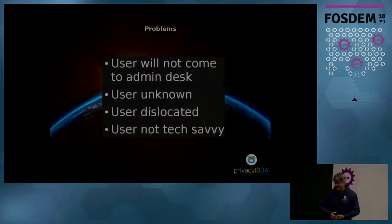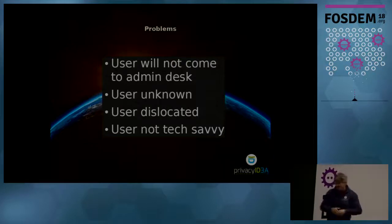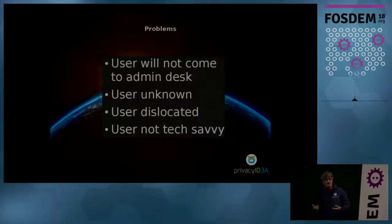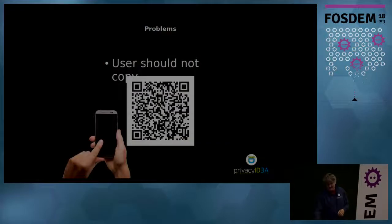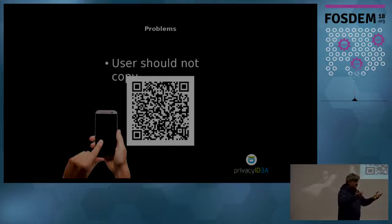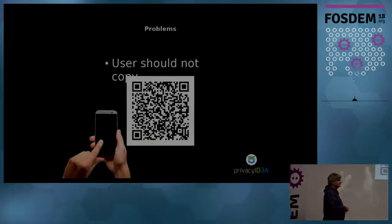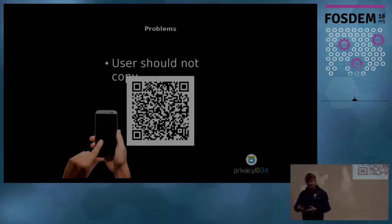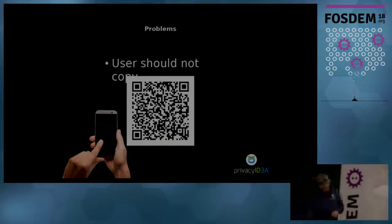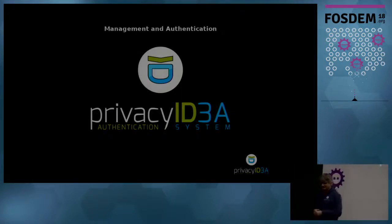Users will not come to the administrator's desk, users might be unknown, users are — I call them dislocated — they may be located around the globe. And probably such users are not very tech-savvy. Users should not copy secrets, so it's always a question how you think about two-factor authentication. For example, enrolling a Google Authenticator actually unveils the secret key for your authentication. We will take a look at how privacyIDEA can help you cope with the problems of large user numbers.